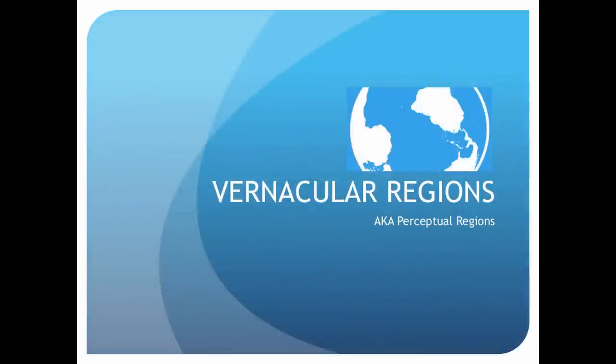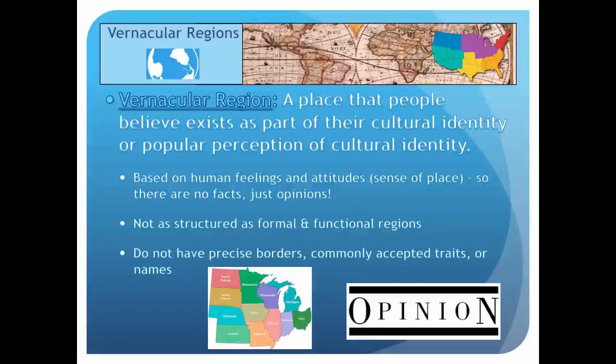The third type of region is called the vernacular region, sometimes also called a perceptual region because it is based on what people think about a place — essentially their opinion. A vernacular region is a place that people believe exists as part of their cultural identity or popular perception. They are based on human feelings and attitudes about areas, which are also referred to as sense of place. There are no facts here — vernacular regions are based on opinions.